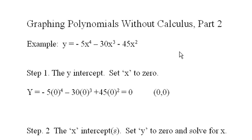We find the y-intercept by setting x to zero, and when we do that we get zero for y. So we have a y-intercept that goes through the origin, which is also an x-intercept.